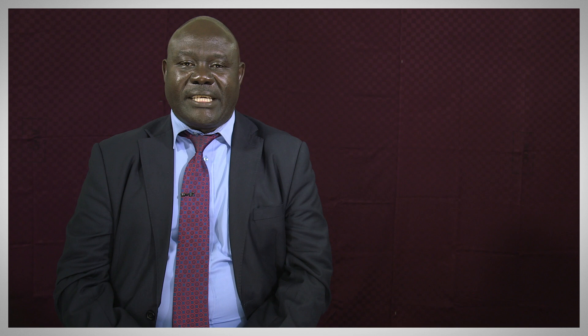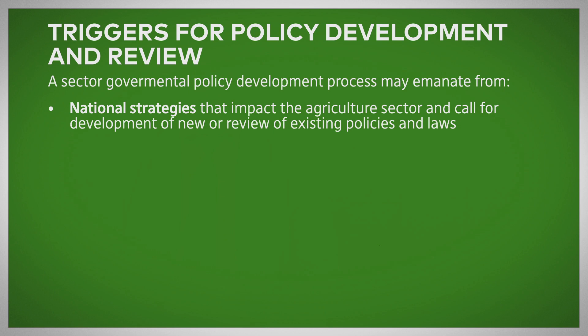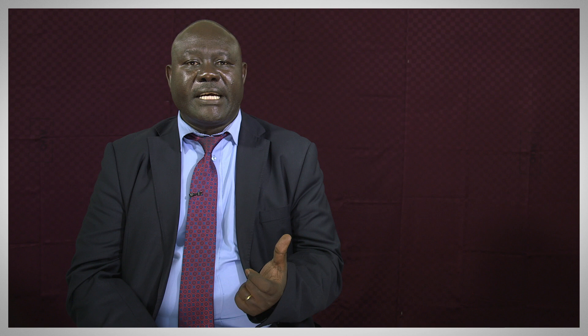What are some of the key factors that make policy processes begin? One factor could be decisions made at the high level, like decisions made at the national level. For example, in Kenya we have the Big Four, given by His Excellency the president. We are making policies so that we align ourselves to them. The Big Four in Kenya are 100% food security, manufacturing, housing, and universal health care.